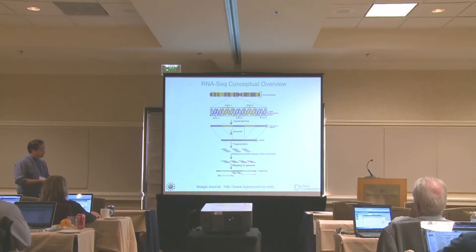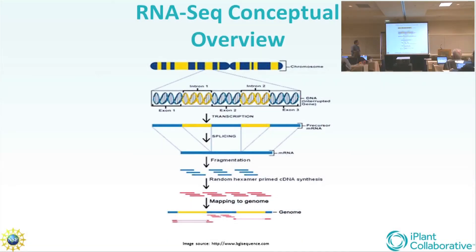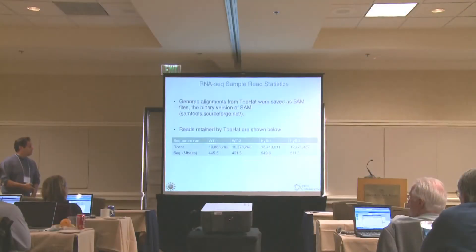A quick overview of RNA-seq: we start off in the cell, and it makes messenger RNAs, which are spliced to form mature messenger RNAs. Then we move into the wet lab and fragment the messenger RNAs to do random hexamer-primed cDNA synthesis. Then we move into the in silico or dry lab and align these short reads to the reference genome, making inferences about transcript structure based on where the reads map and mapping across splice junctions, and also inferences about transcript abundance based on the number of reads that map to particular transcripts.